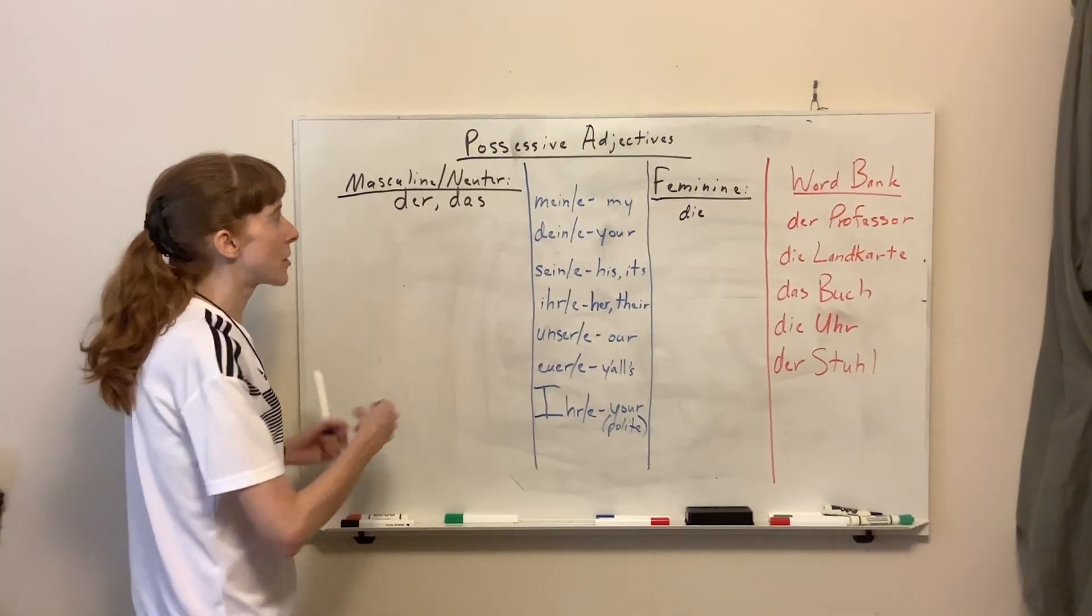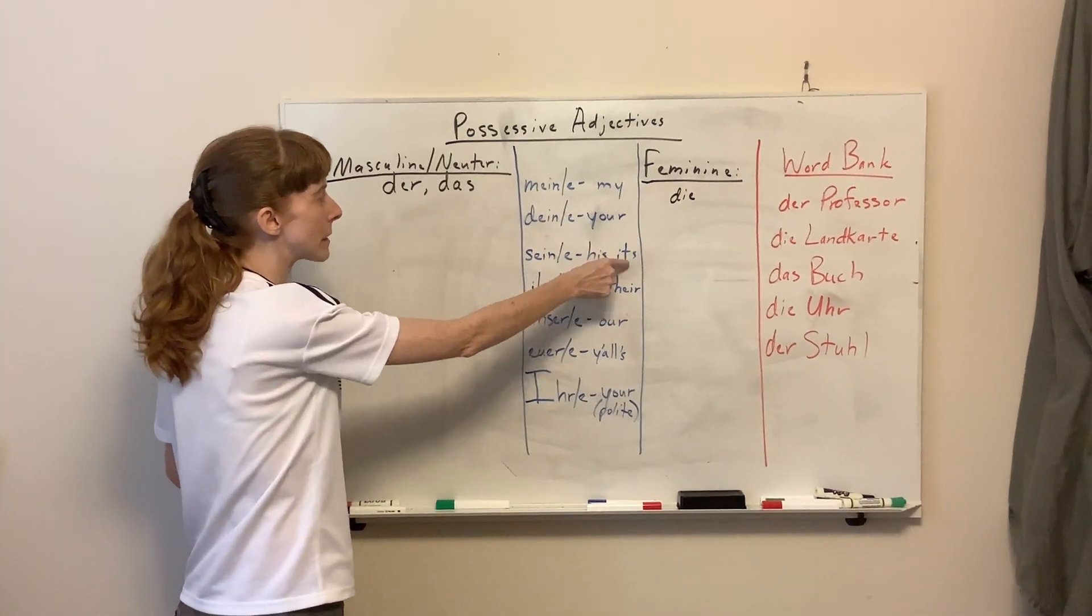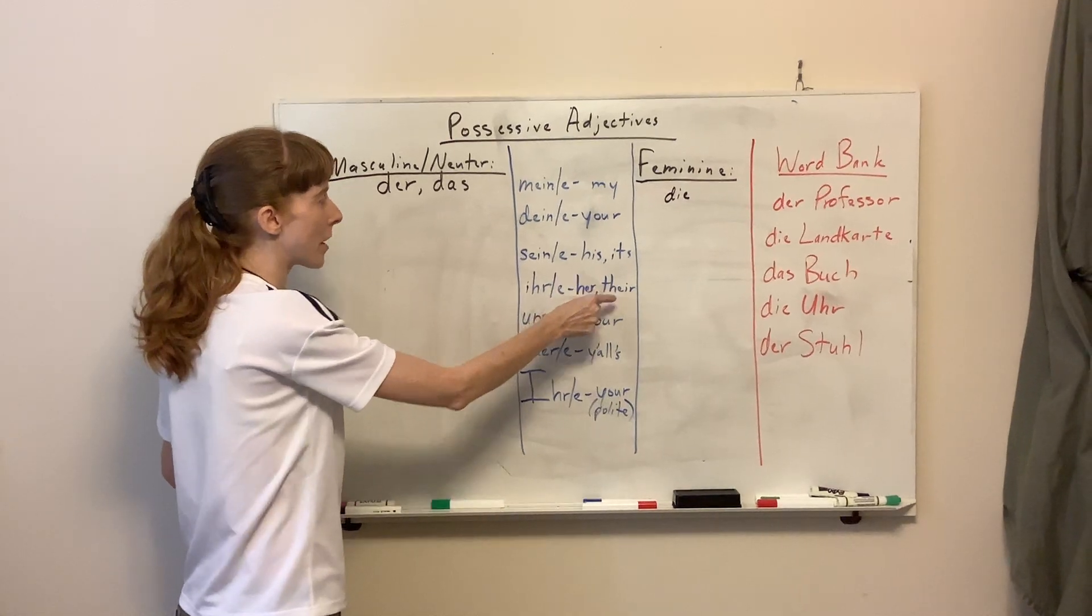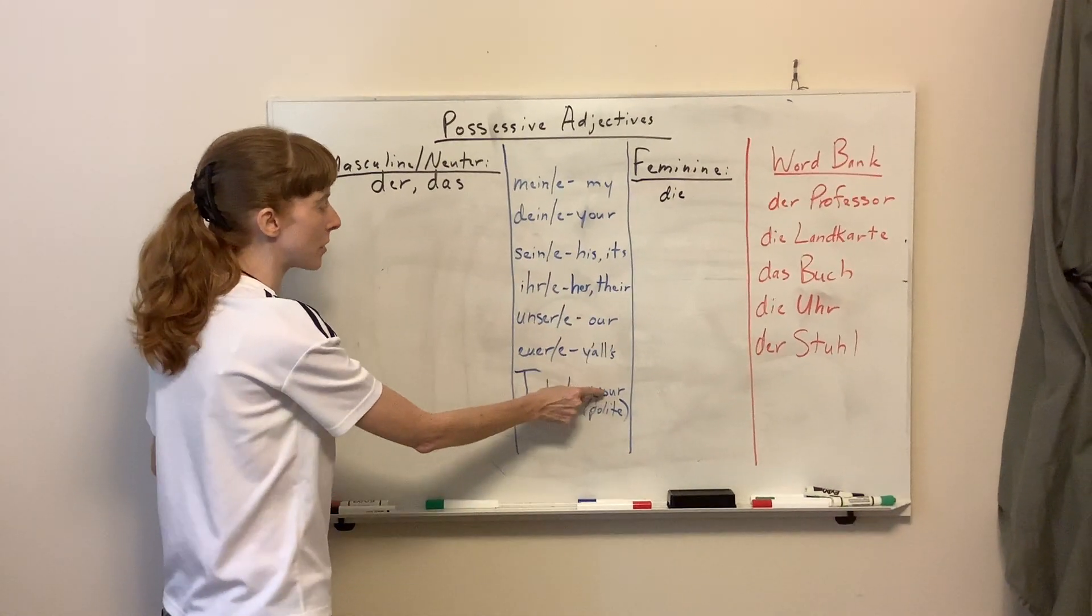So possessive adjectives are things like my, your, his, its, her, their, our, y'alls and your polite. So I've got them listed here.